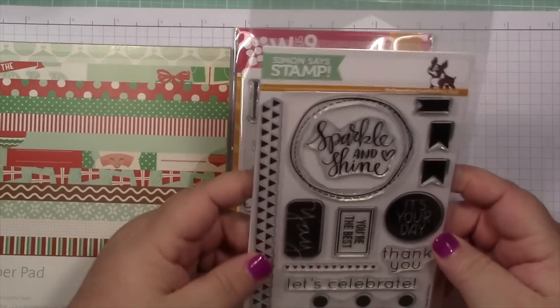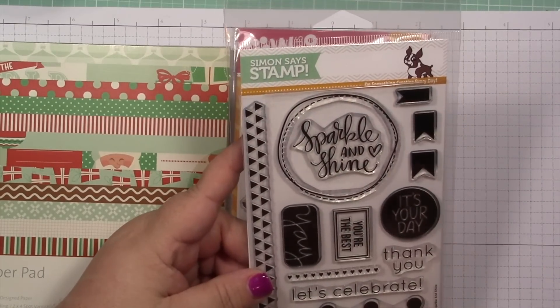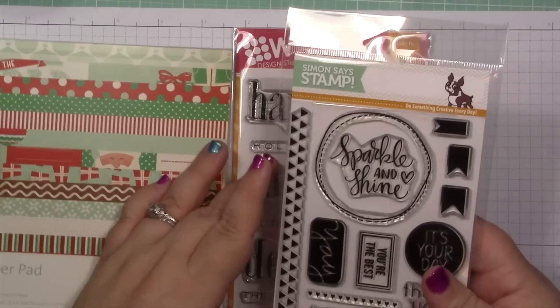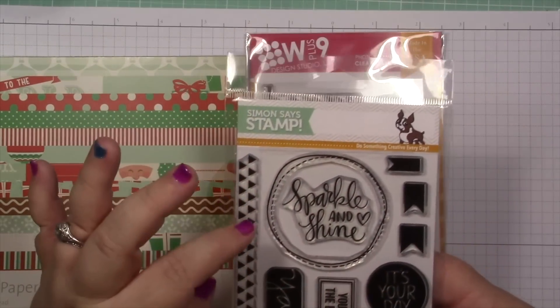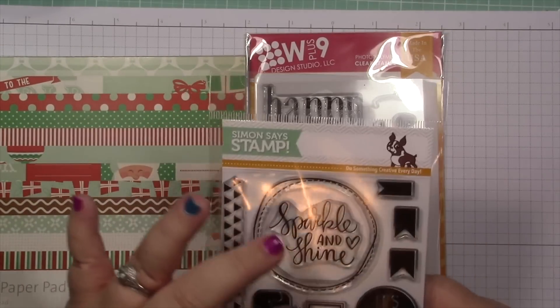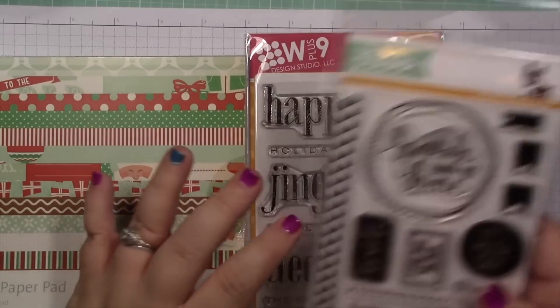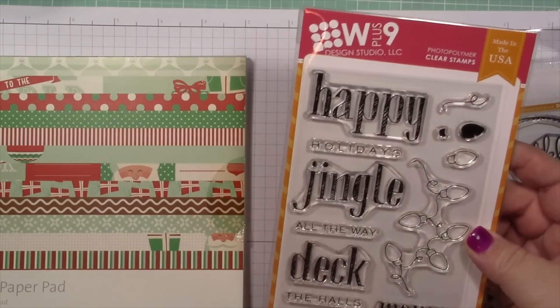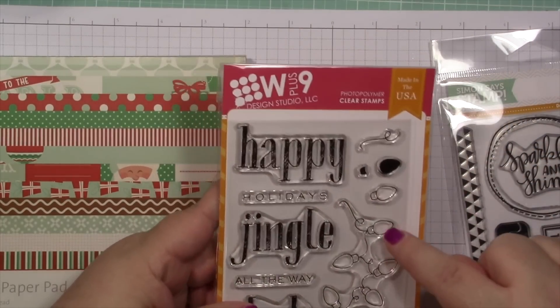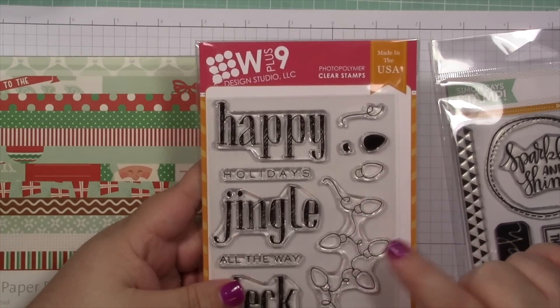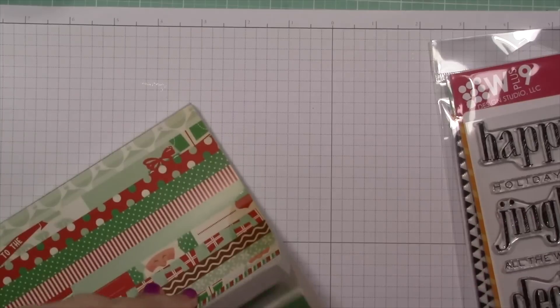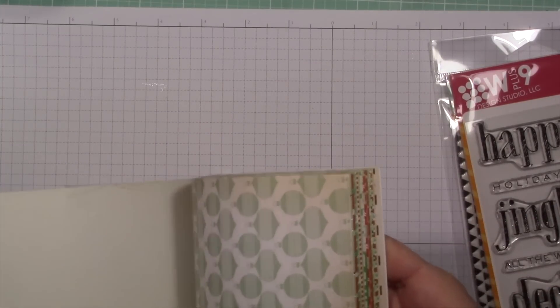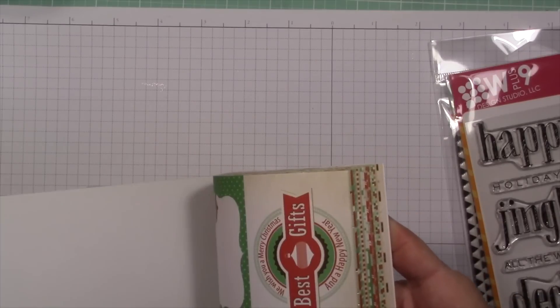I picked one stamp set that's not holiday related. This is Sparkle and Shine by Simon Says Stamp. I'm going to use the Sparkle and Shine sentiment and this circle around it. From the stamp set Festive Greetings by WPlus9, I'm going to use this Strand of Lights.